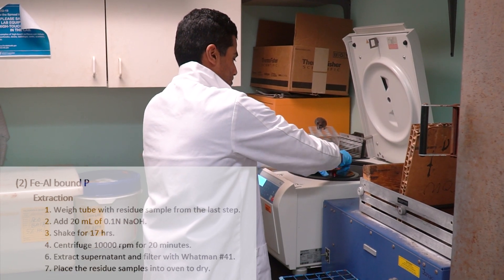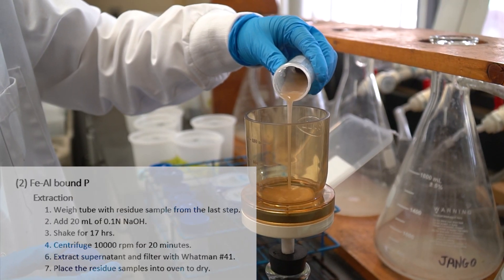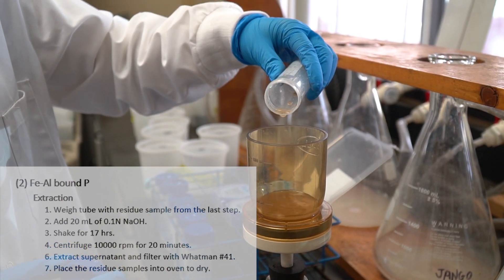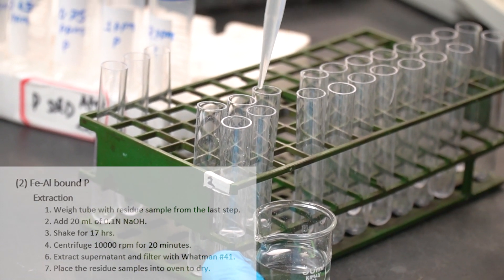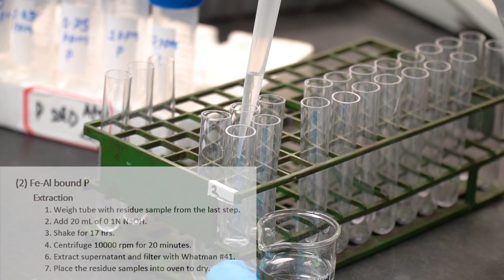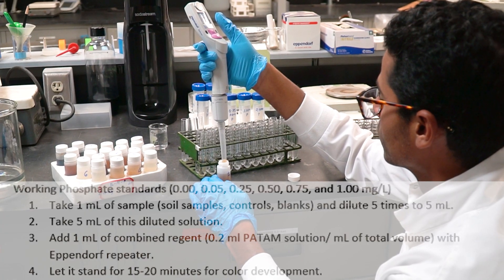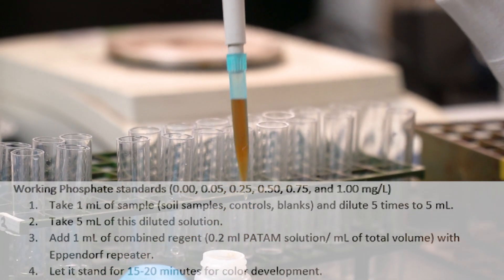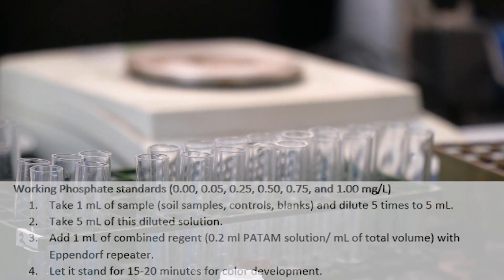Then, we have to extract the supernatant using filter Whatman 41. After that, we have to save the residue samples and place them inside the oven at 60 degrees Celsius for next extraction. The supernatant of this extraction will be used to analyze iron aluminum bound phosphorus using combined reagent.